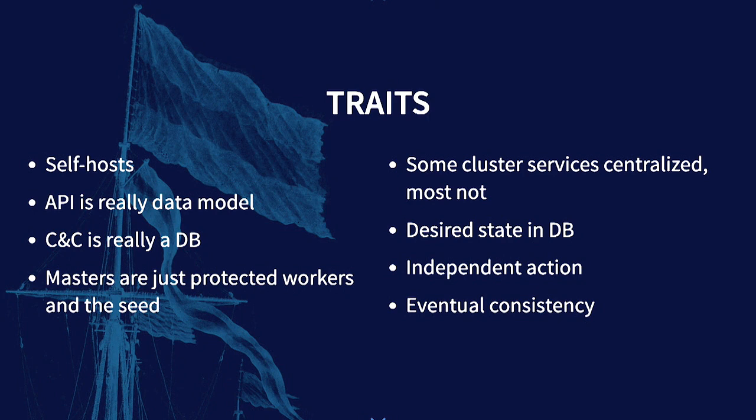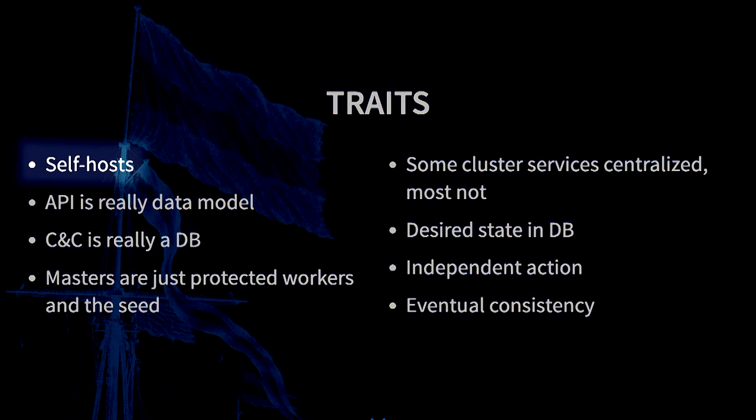So we're going to spend a couple of minutes talking about its traits, and I'm going to give you some examples. The first trait that's sort of interesting is Kubernetes self-hosts. Kubernetes uses its own infrastructure to manage its infrastructure. It does not rely on something else. Basically, the same mechanics that will run your workloads and make sure they're available and up — all those things that Kubernetes does — is also used by Kubernetes to make sure Kubernetes itself is running. Kubernetes views itself as really just another application in your fabric. That's what we mean by self-hosting.